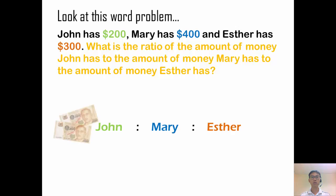Now what's the ratio? John, I have $200. So I'm going to write this down because ratio we can also talk about it in terms of actual quantity. So John, $200 is $2. Mary is $400 is $2. Esther would be $300.